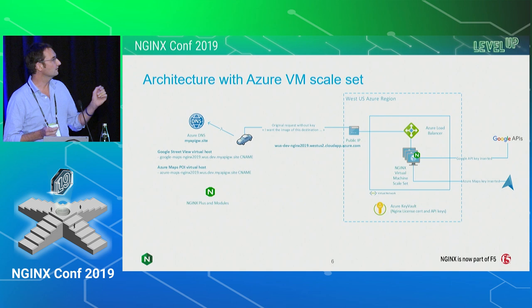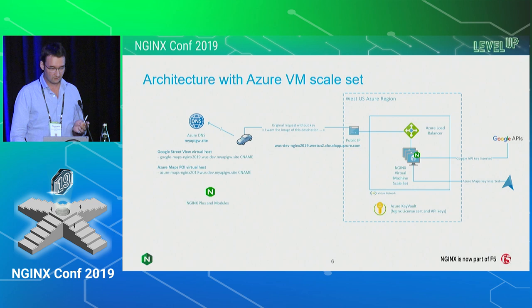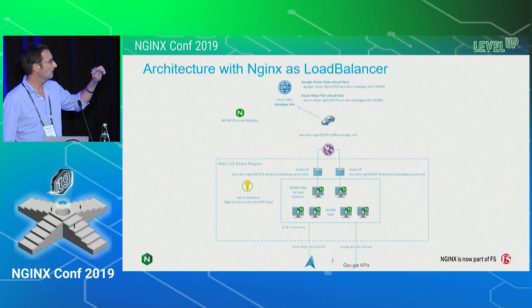I had a discussion about using the Nginx load balancer instead of the Azure one — that's another option you can have. I didn't show it today, but to move out of the virtual machine scale set, which is only possible with an Azure load balancer, you could just push standard virtual machines.